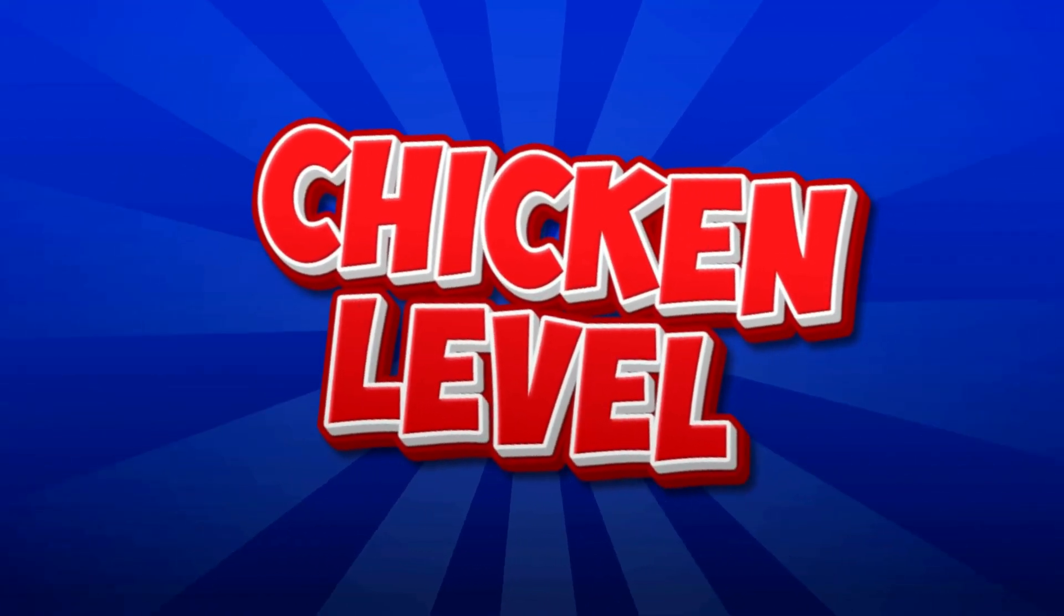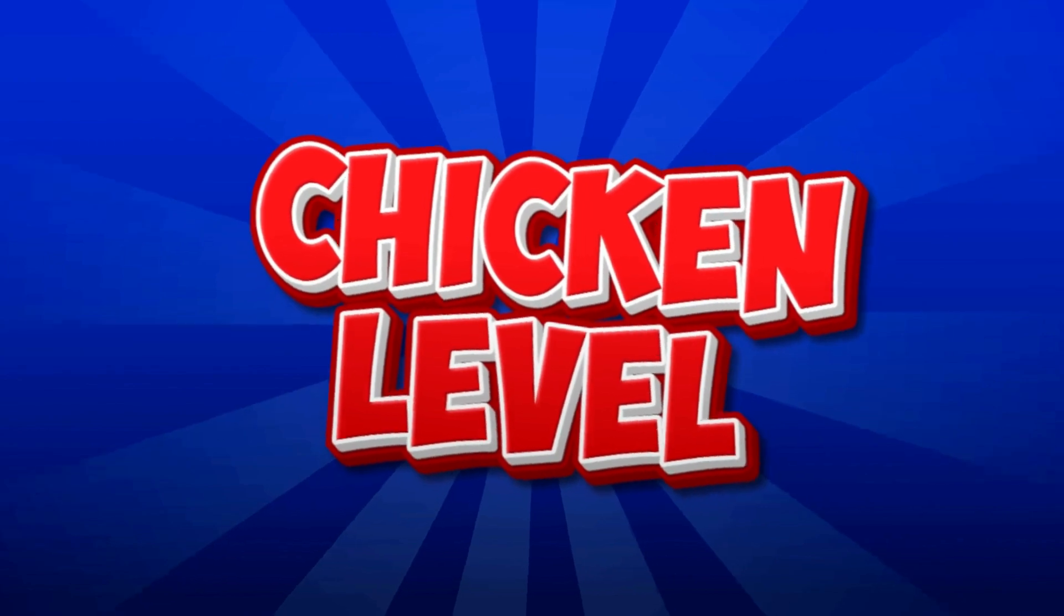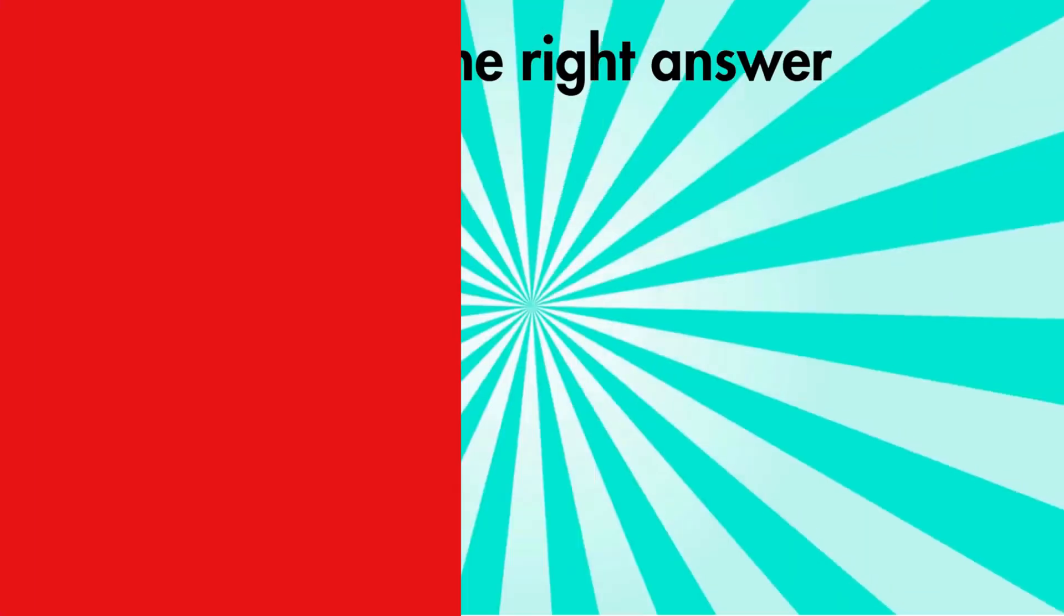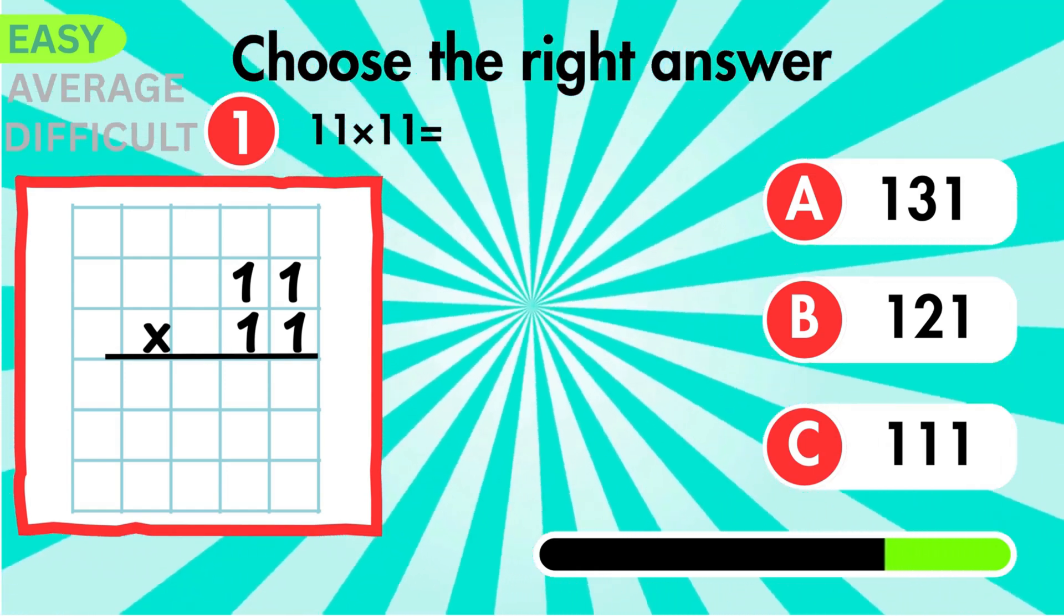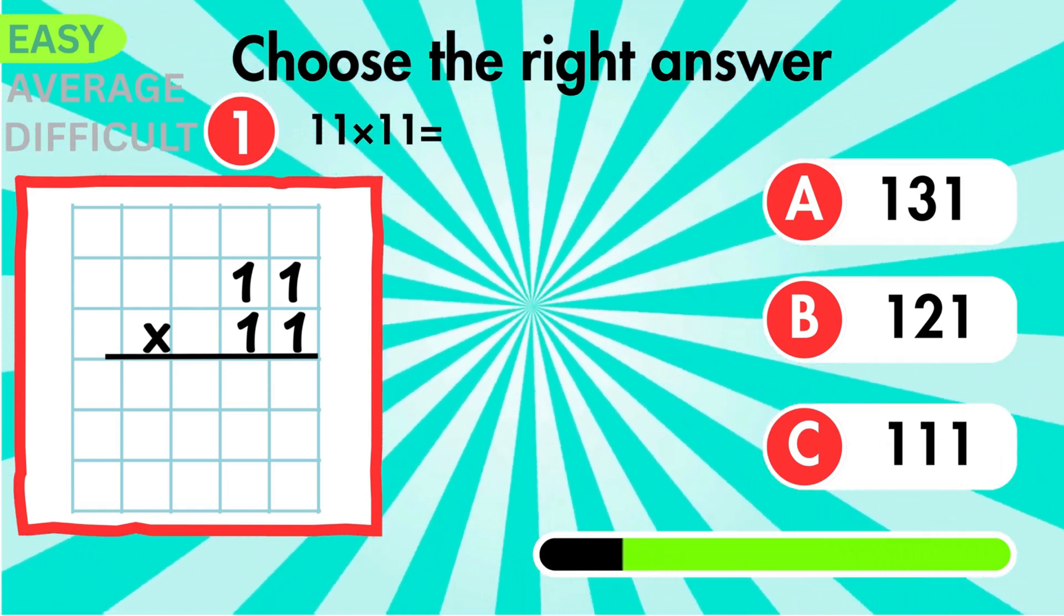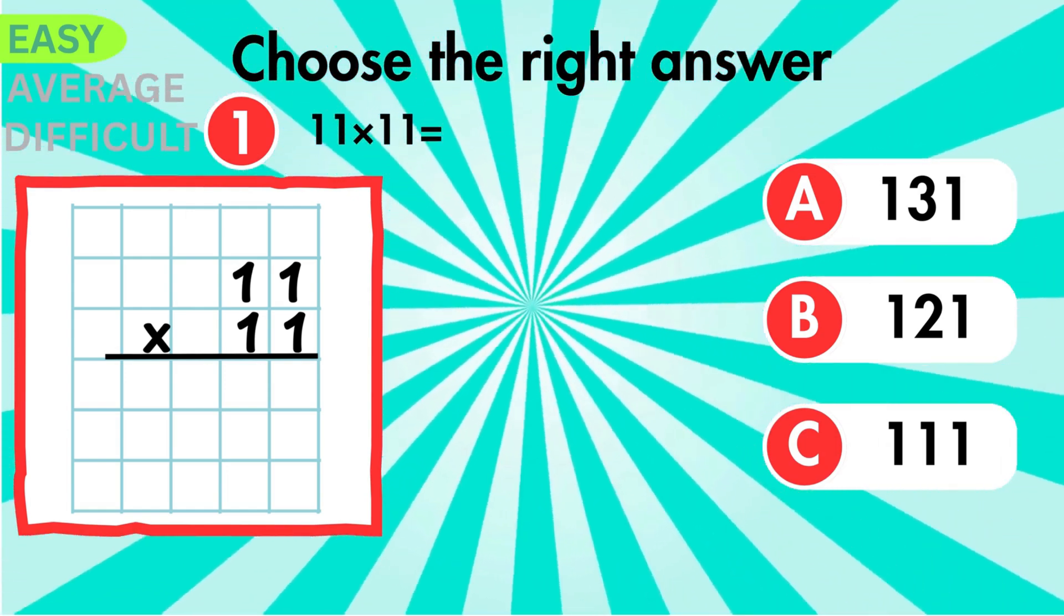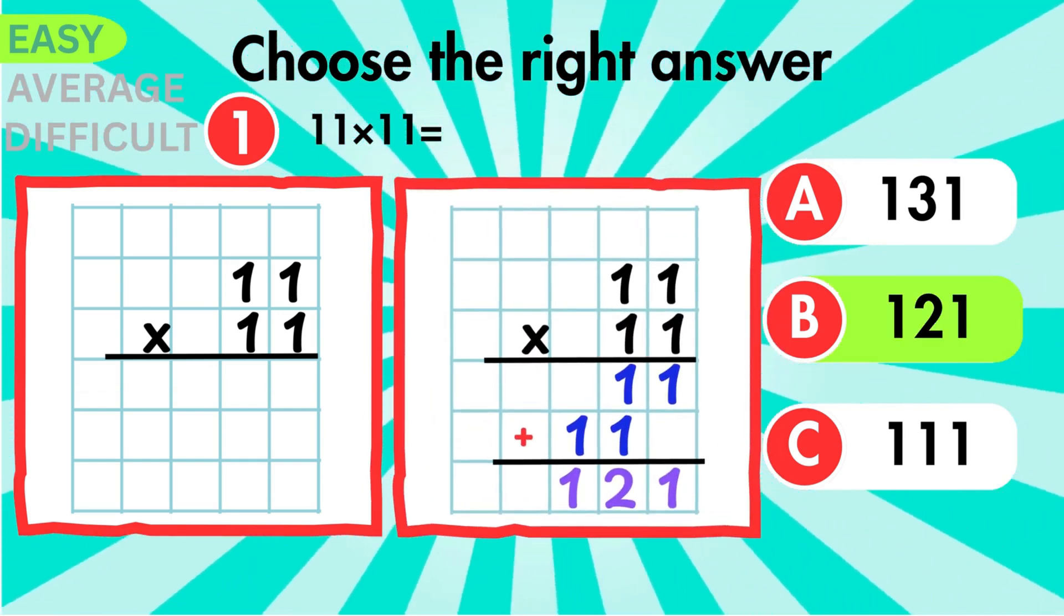These first five questions are straightforward, so stay focused on your place values. We start with 11 groups of 11. Can you find the total? That makes 121 altogether.